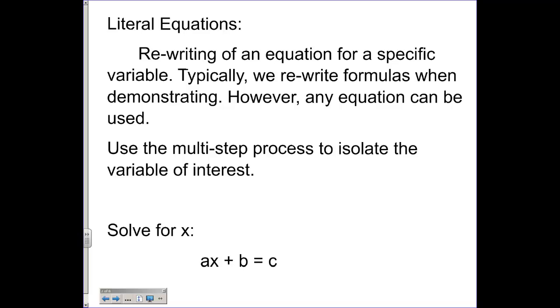We're going to use the multi-step process to isolate the variable of interest. If you see an example like this where it says solve for x, what we're trying to do is use our multi-step process to get x by itself. So a times x plus b equals c.